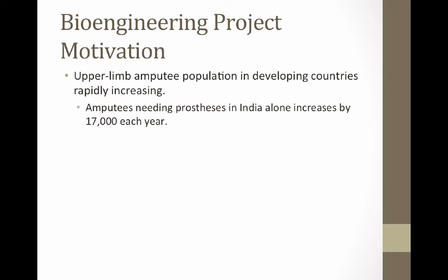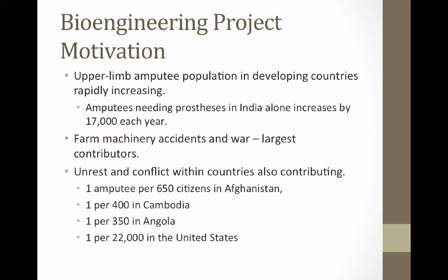In India alone, the amputee population that needs prostheses increases by seventeen thousand each year. The need for having a limb amputated is mostly caused by accidents from farm machinery and war. Conflicts within countries are contributing at rates much larger than in the United States. There are estimates of one amputee per 650 citizens in Afghanistan, one per 400 in Cambodia, one per 350 in Angola.